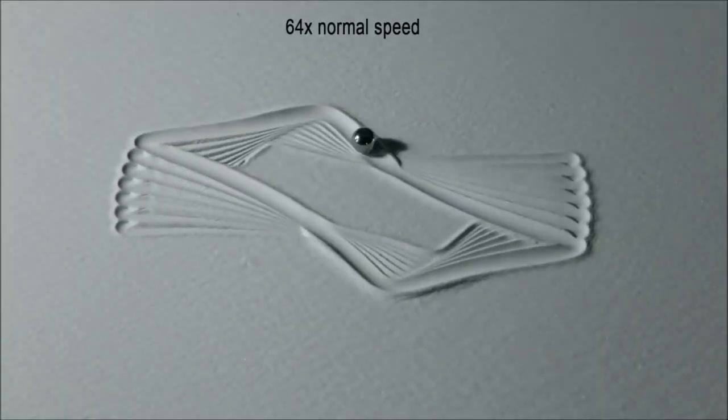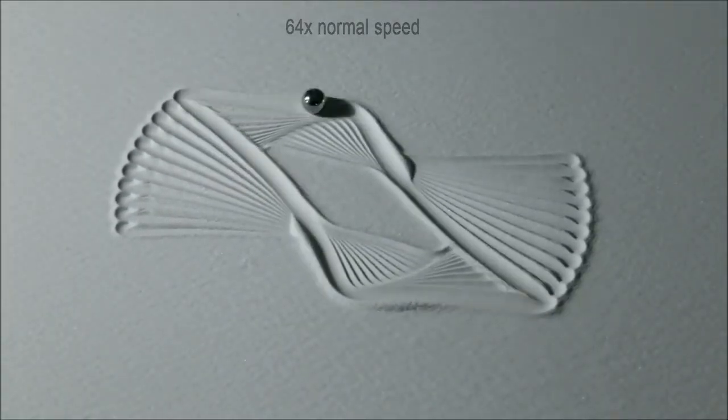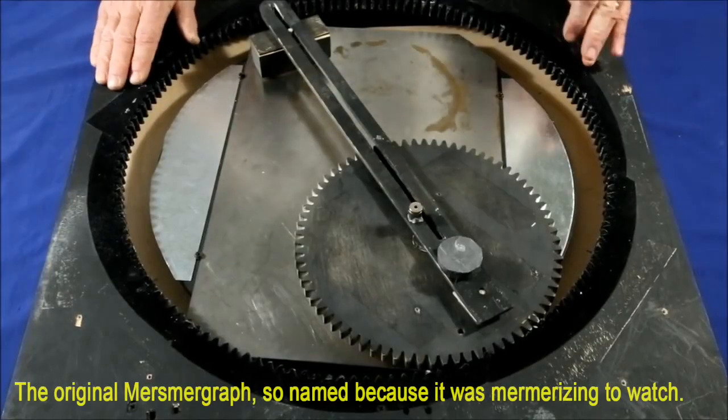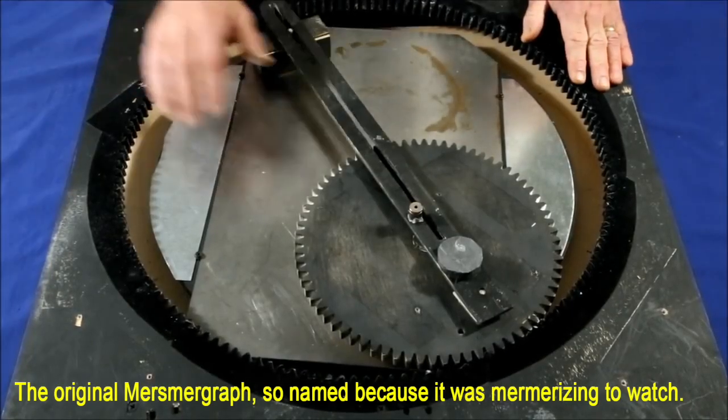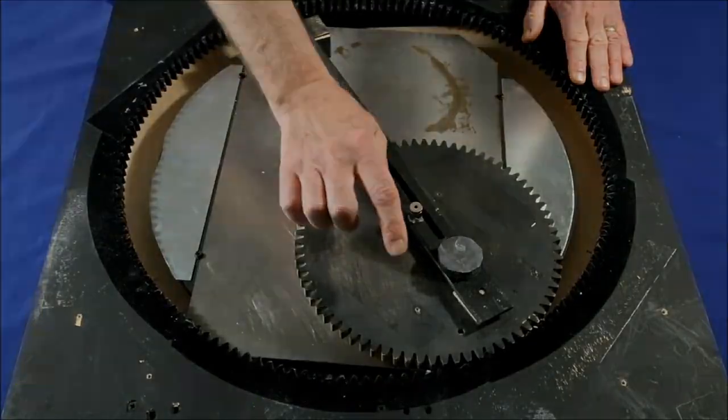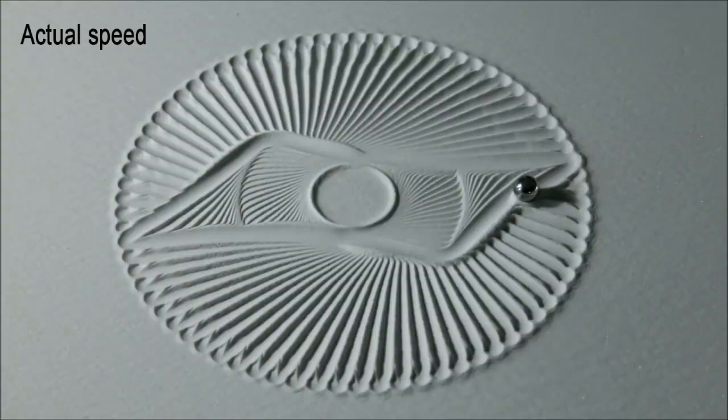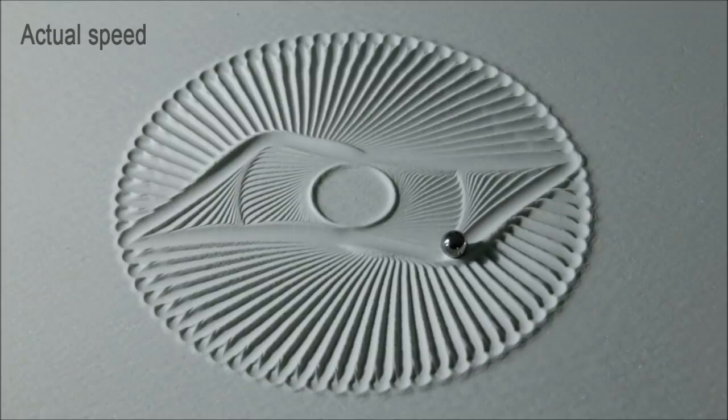The original mesmograph could draw incredible images in sand, like this, but it was big, ugly, hard to use, had lighting problems, and, as you can see in this example of its actual drawing speed, painfully slow.